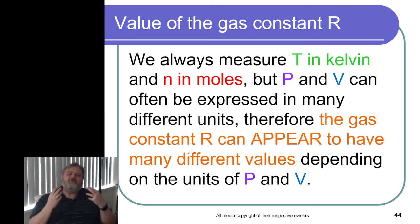But because of those different pressure and volume units, the gas constant R can appear to have many different values, even though it always represents the same thing. So the value of R appears to change depending on the units of pressure and volume. And again, that comes back to the idea of units.